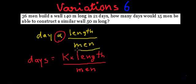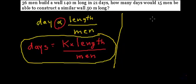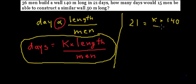If we substitute the data from the first case into this formula, we will get one equation. That equation will be: 21 days are required to build a wall of length 140 when 36 men are working on it. This is the first case.